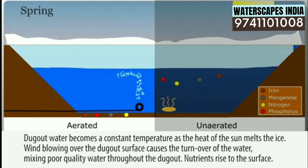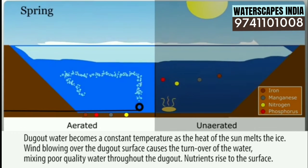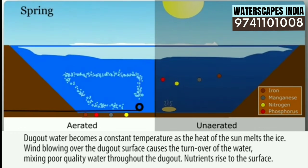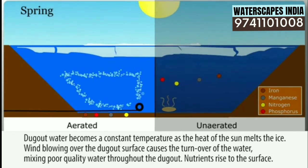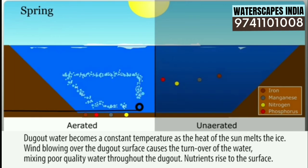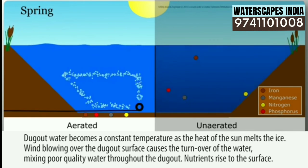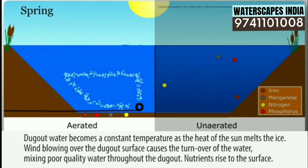Unaerated: dugout water becomes a constant temperature as the heat of the sun melts the ice. Wind blowing over the dugout surface causes the turnover of the water, mixing poor quality water throughout the dugout. Nutrients rise to the surface.